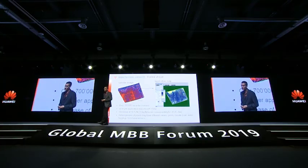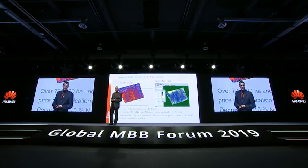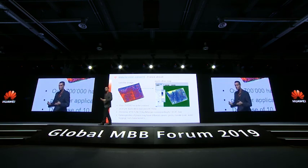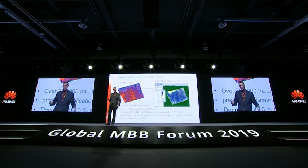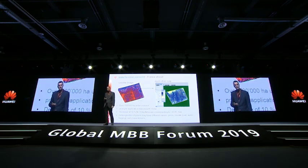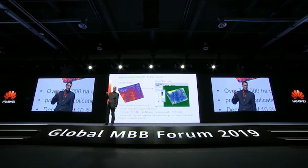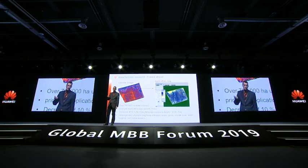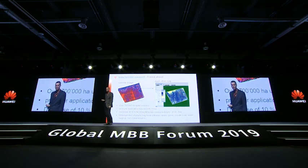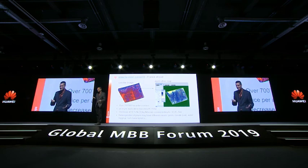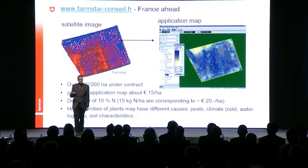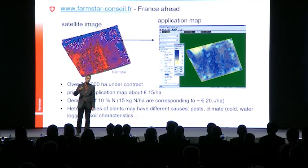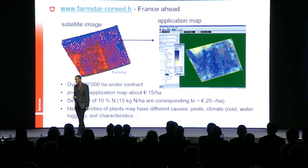Another example is satellite imagery — already used in France for fertilisation of plants. The resolution is much coarser than drone images, and in Switzerland you have so many clouds that there are often no satellite images available. There is quite a bit of competition between these technologies, but these pictures can also be treated automatically and transferred to tractors to apply the right amount of fertilisation.